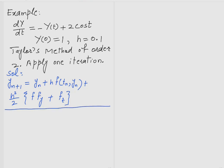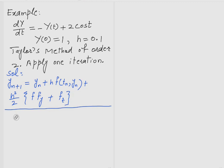First, we need to identify the function from the initial value problem — specifically the right-hand side. So f(t, y) = -y + 2cos(t).